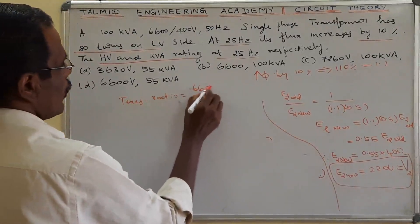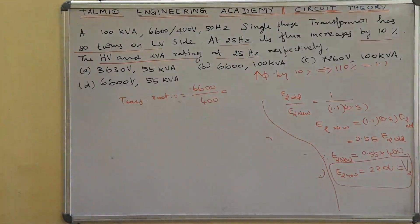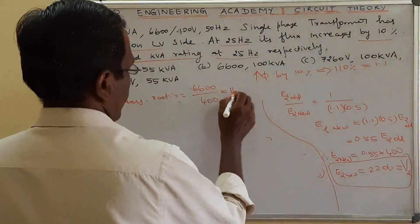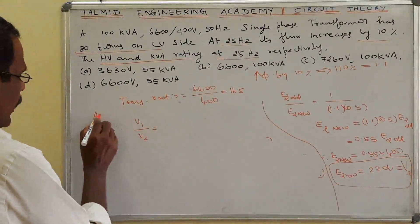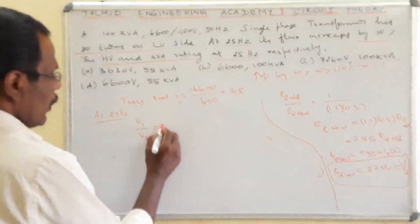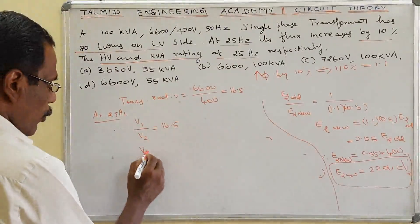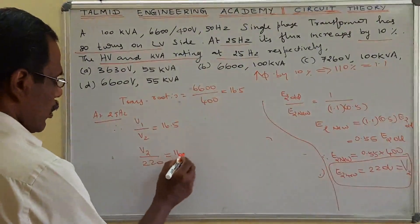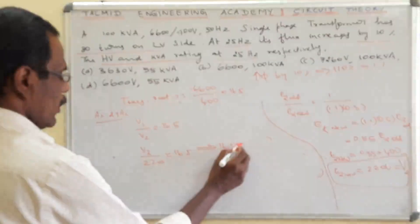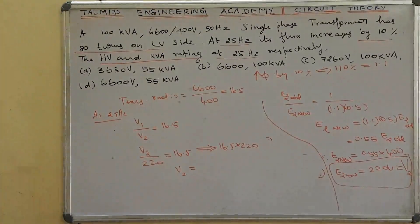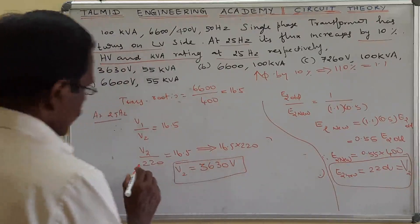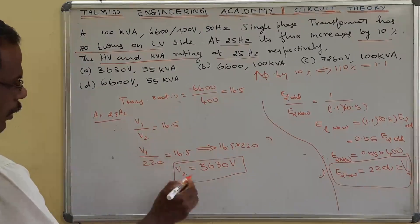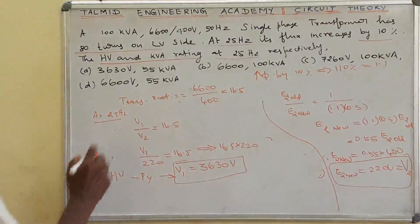The turns ratio is N1/N2 = 6600/400 = 16.5. Therefore V1/V2 at 25 Hz: applying the same ratio, V1 = 16.5 × V2_new = 16.5 × 220. Therefore the HV side — that is primary voltage — HV side voltage is 3630, approximately 3600 volt. This is the HV rating.